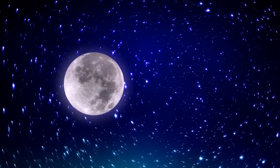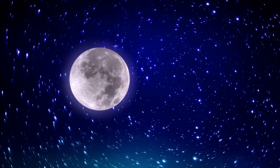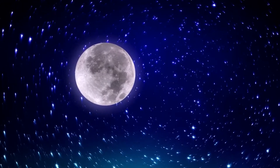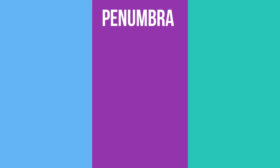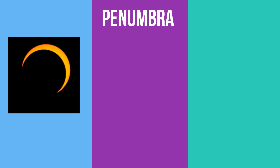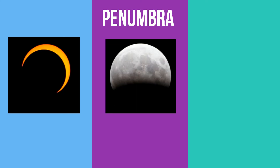If the Earth or Moon is found in the Penumbra, you get a partial solar eclipse or a penumbral lunar eclipse.